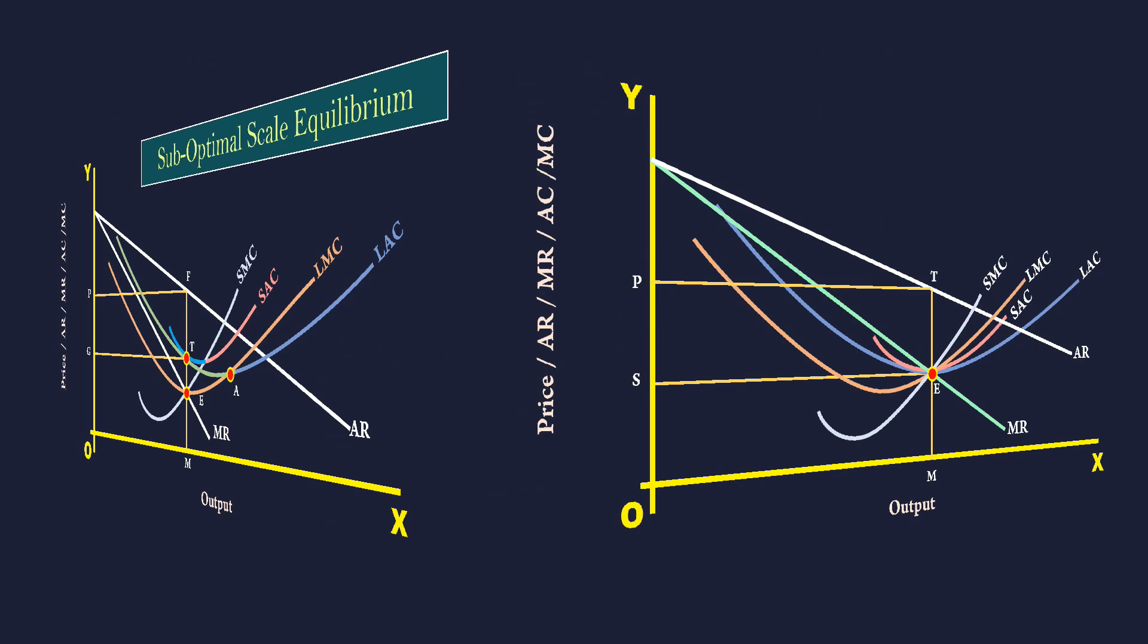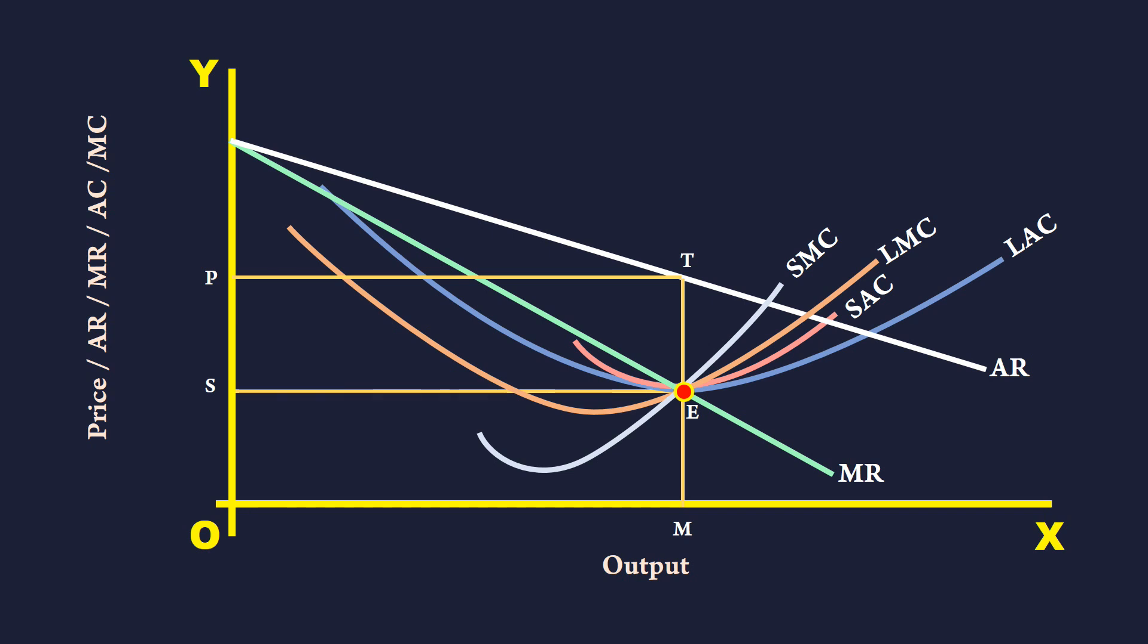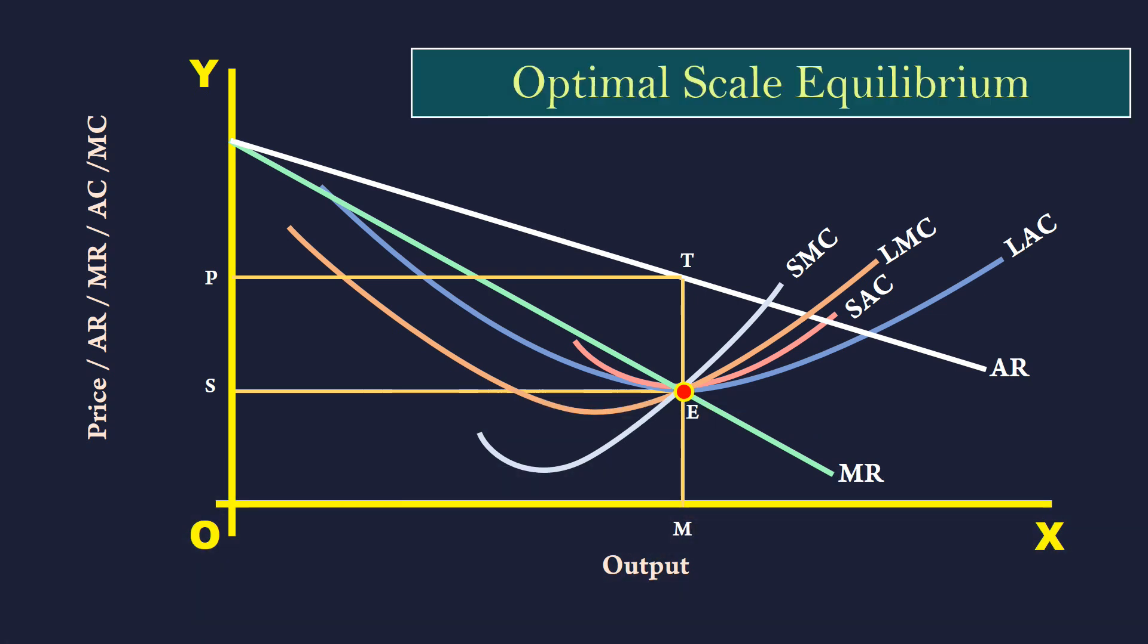See this diagram. It also exemplifies long run monopoly equilibrium. It is called optimal scale equilibrium because the monopoly firm is operating at the minimum point of the LAC and SAC curves.